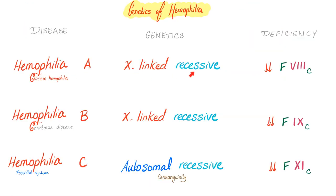Hemophilia A is X-linked recessive; the problem is factor 8, which could be a deficiency or an inhibitor/antibody. Hemophilia B, or Christmas disease, is also X-linked recessive, with the problem being factor 9. Hemophilia C, or Rosenthal syndrome, is autosomal recessive, and the problem is factor 11. Remember: X-linked recessive affects boys; autosomal recessive is associated with consanguinity.